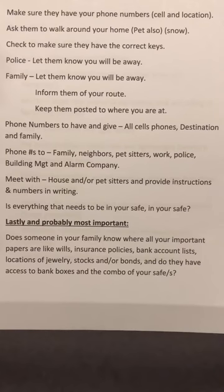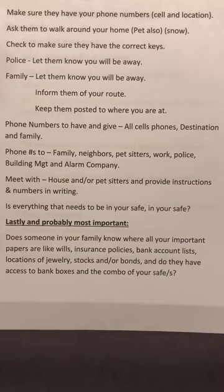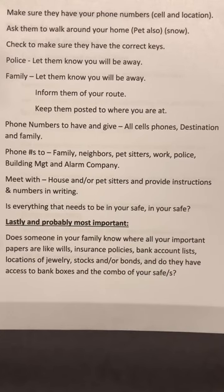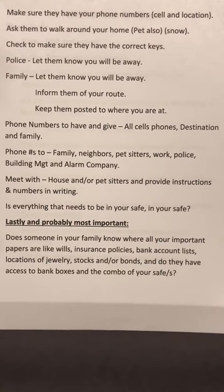All the way at the bottom is really the last and probably most important item: does someone in your family know where all your important papers are — like wills, insurance policies, bank account lists, locations of jewelry, stocks, and/or bonds — and do they have access to the bank box and combo of your safe? God forbid anything happens to you or your entire family, your extended family needs to know where all this important paperwork is. Maybe you and your wife are out and something happens and the kids need this for their future. Somebody needs to know where this stuff is and the keys and all that.